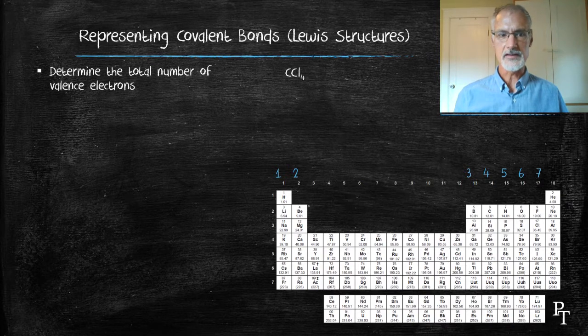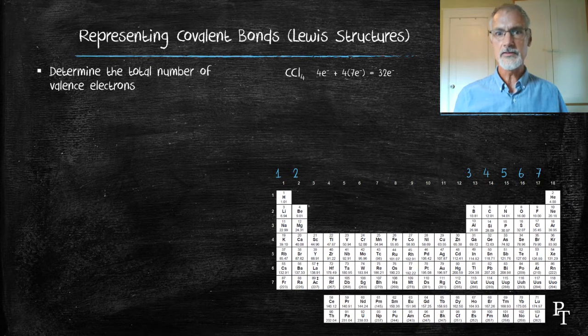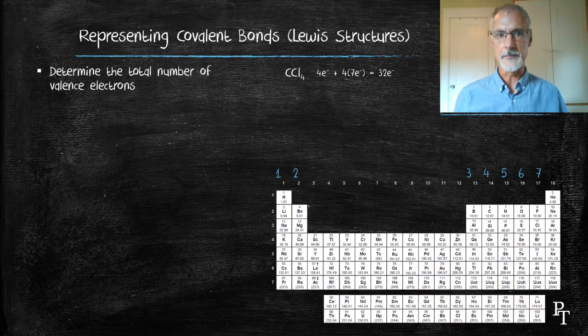Carbon from its location in the periodic table has four electrons and chlorine seven. Since there are four chlorines, 28 in total, that gives me 32 total electrons in my diagram. Again, we're just looking at the valence electrons.